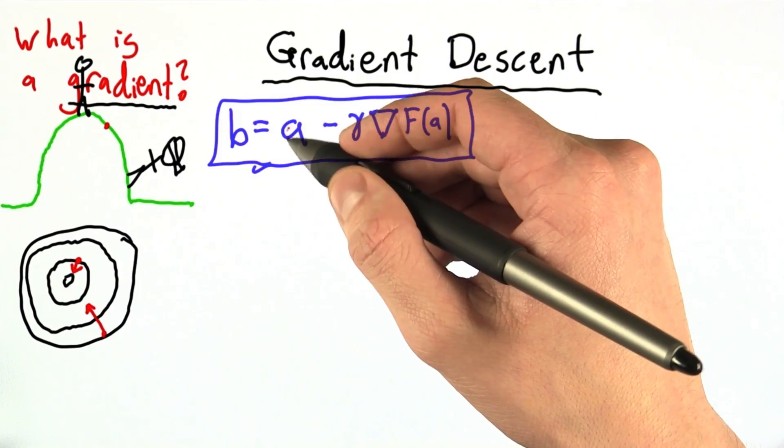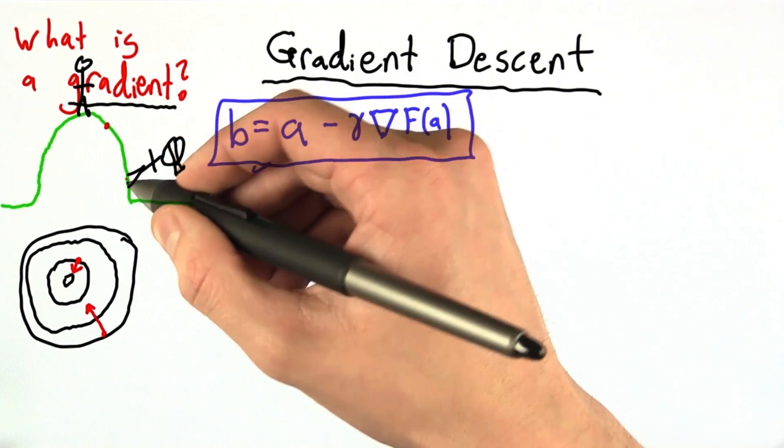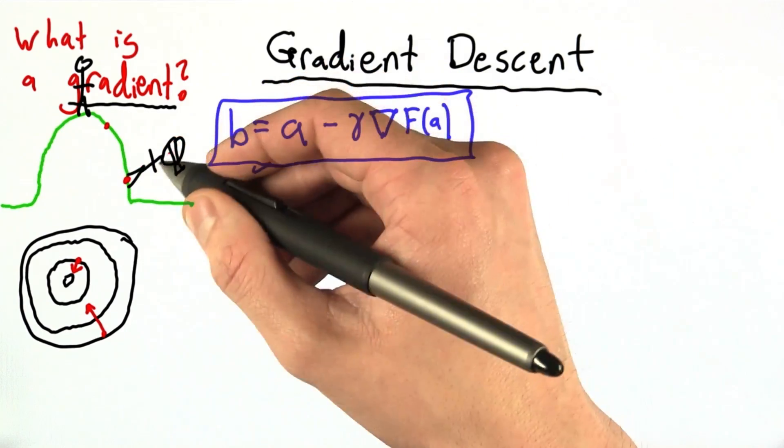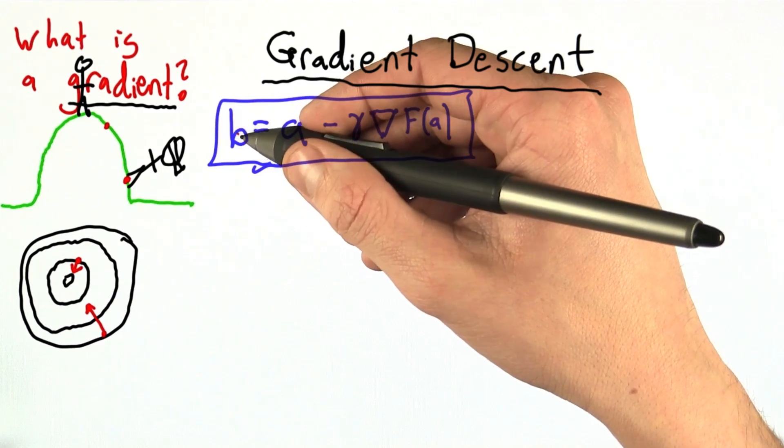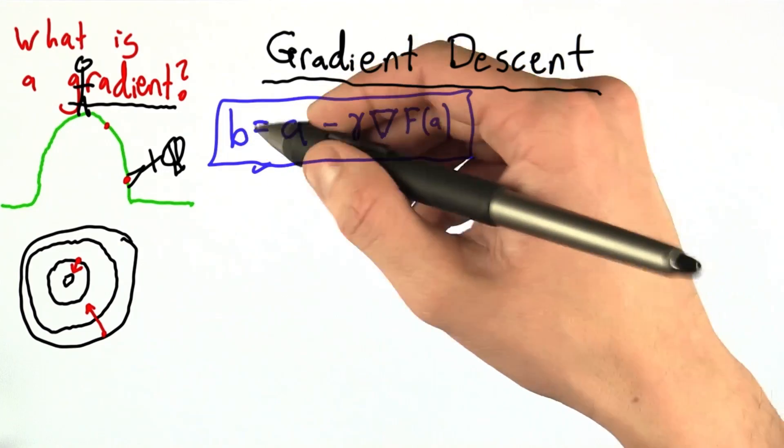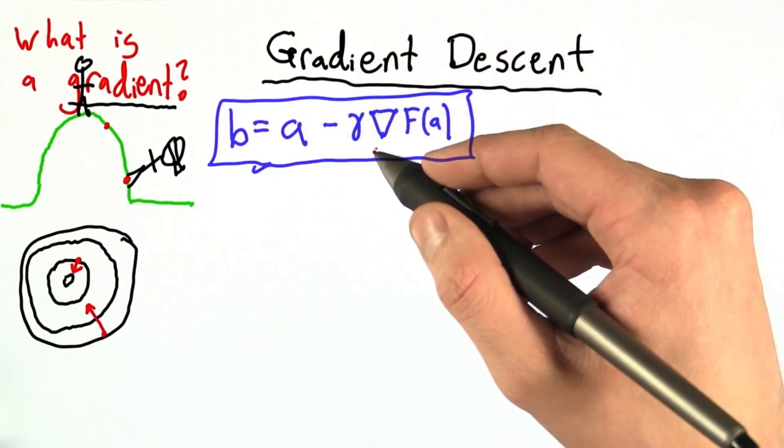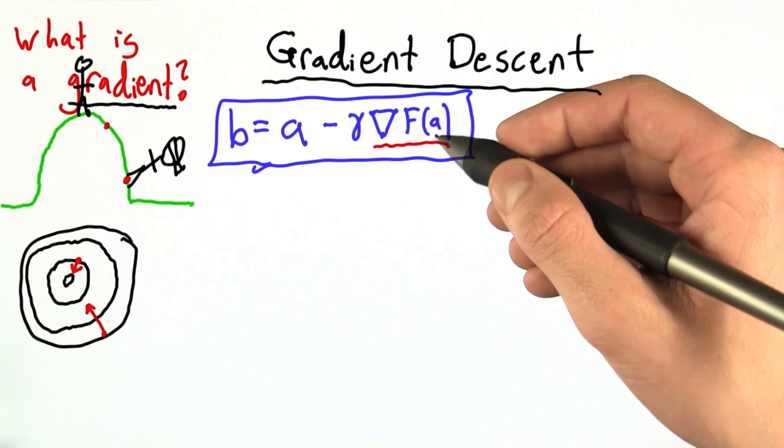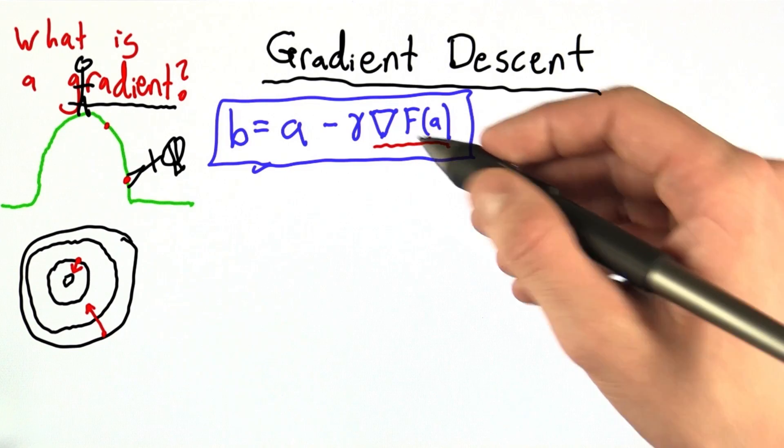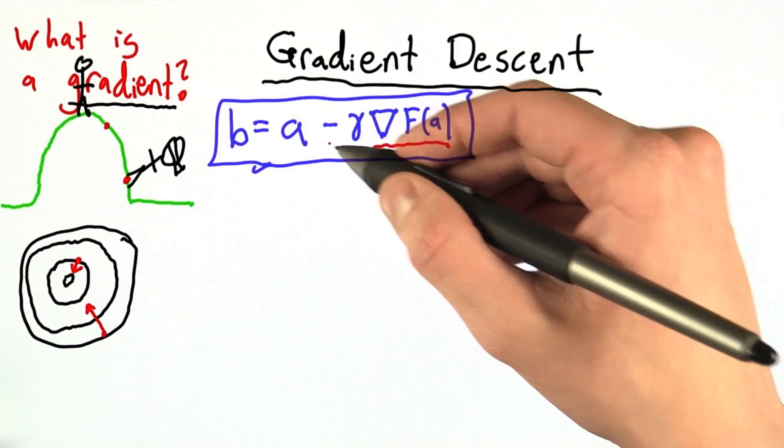So A is our current position. If we were the hill climber, it would be right here where he starts off. B is going to be his next position, so this is how the hill climber decides where to go next. This gradient term tells us the direction of steepest ascent, and this minus sign flips that around and says,